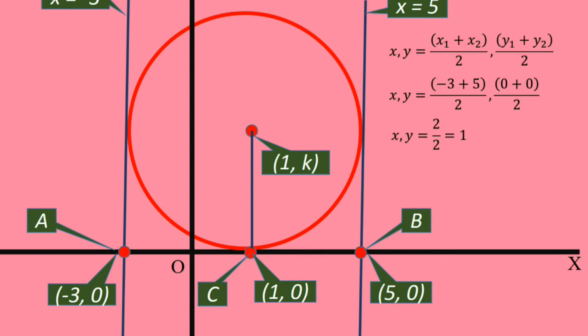Then what is k? The distance from the center of the circle to C is radius. Its length is equal to the distance between C and B, or C and A. The length CB is 4 units. Hence, k lies 4 units up from the x-axis. k is 4.